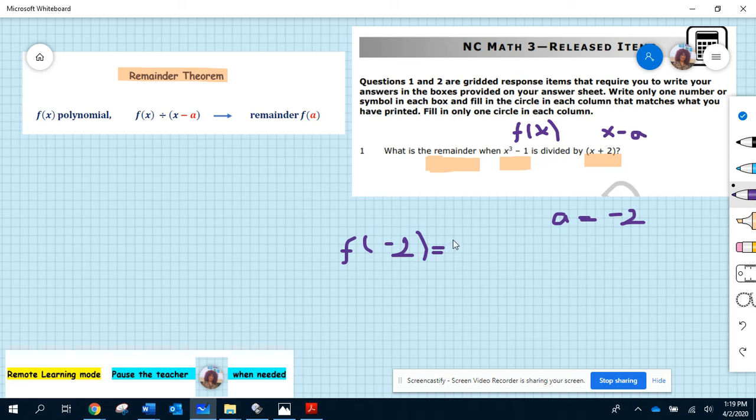What do I have? f for negative 2 will be negative 2 to the power of 3 minus 1. If you calculate this, you get like negative 8, negative 1. Your answer will be obviously negative 9.